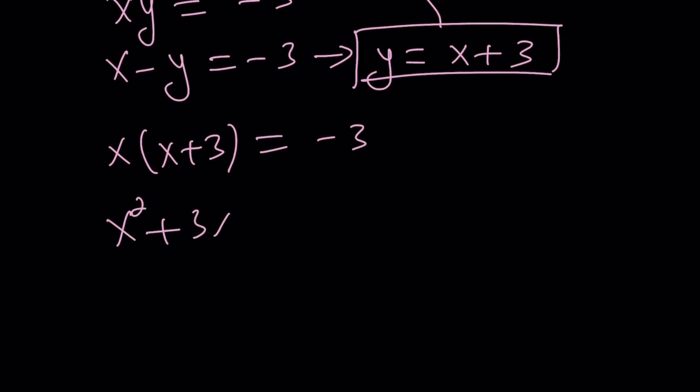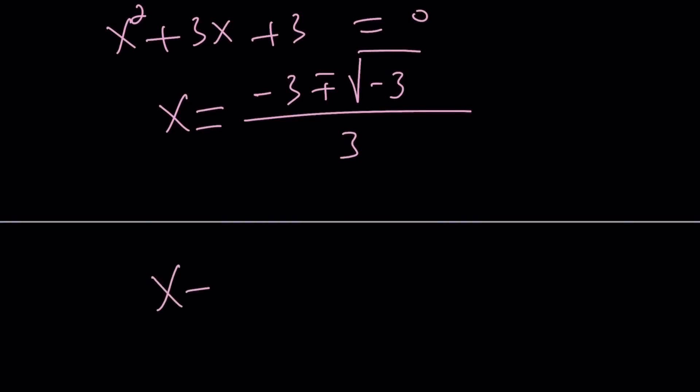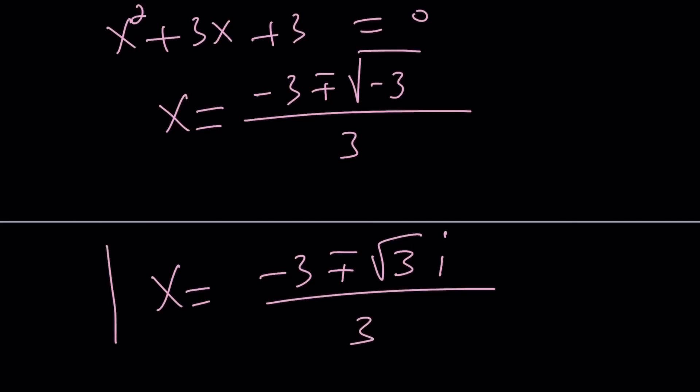x squared plus 3x equals negative 3. But if you add the 3 to both sides, you're going to get the following. And from here, you're using the quadratic formula: negative b plus minus the square root of b squared, 9 minus 4ac which is 12. Uh-oh, we got a complex solution, non-real. And those solutions are going to be plus minus root 3 and so on and so forth.